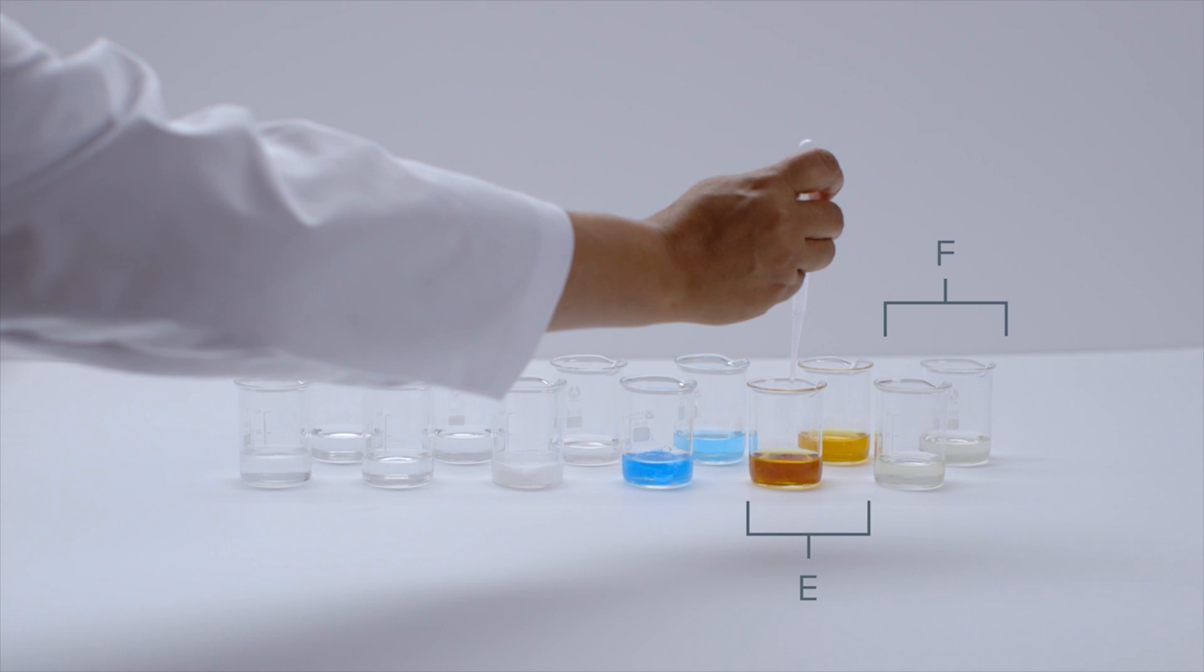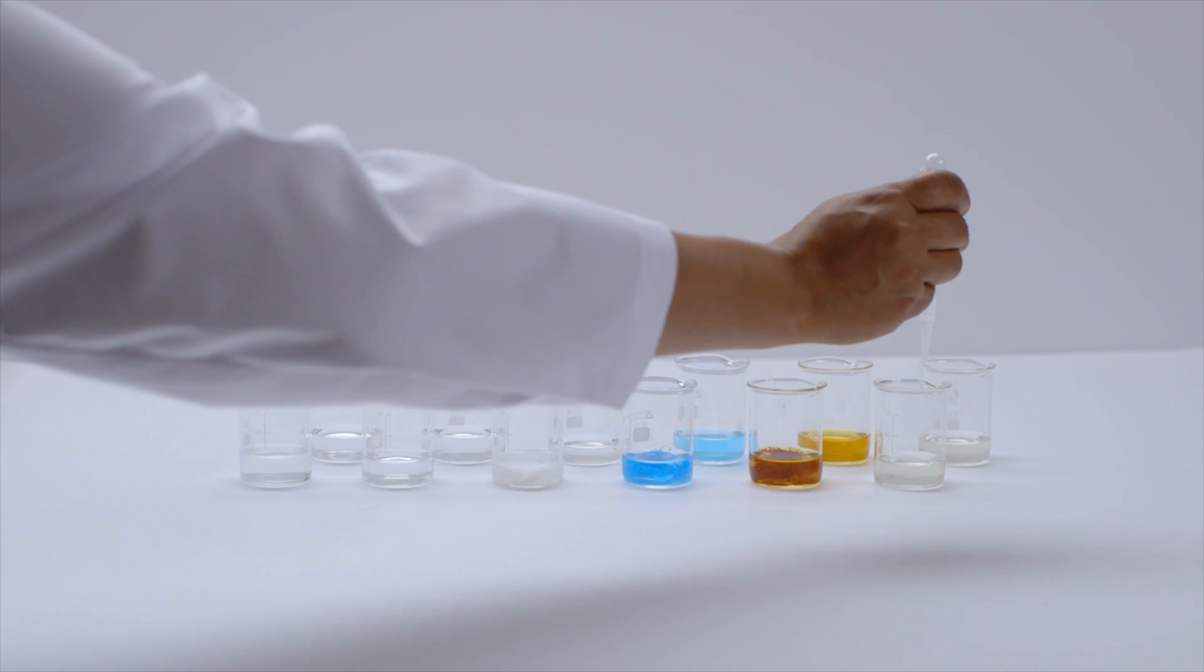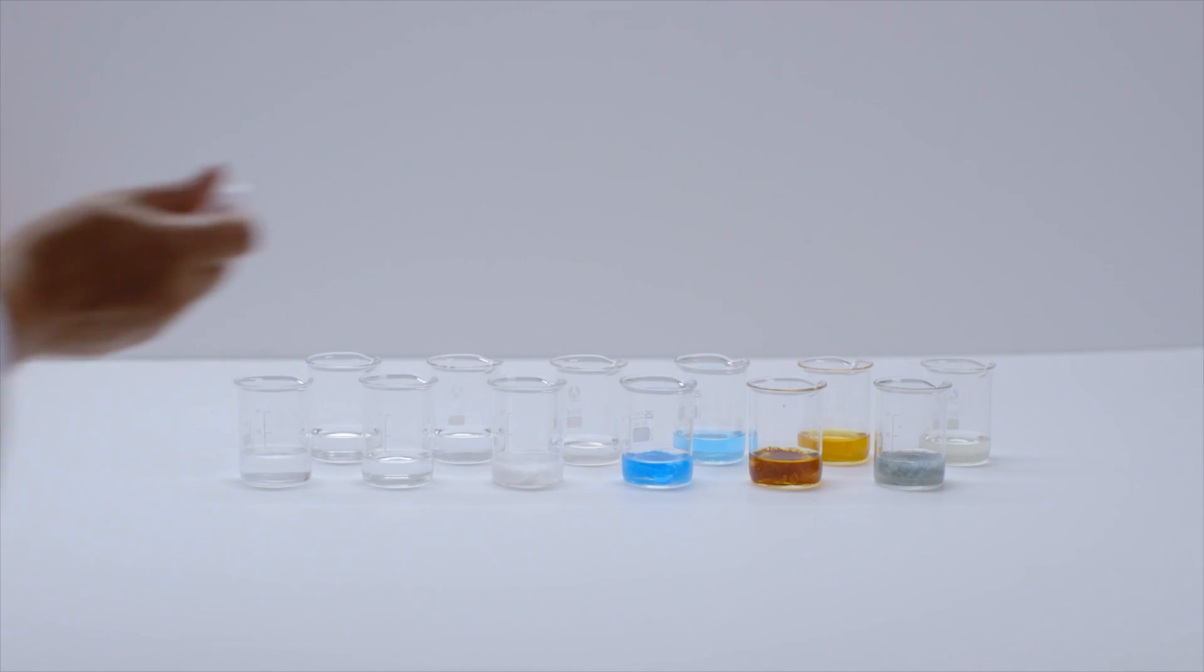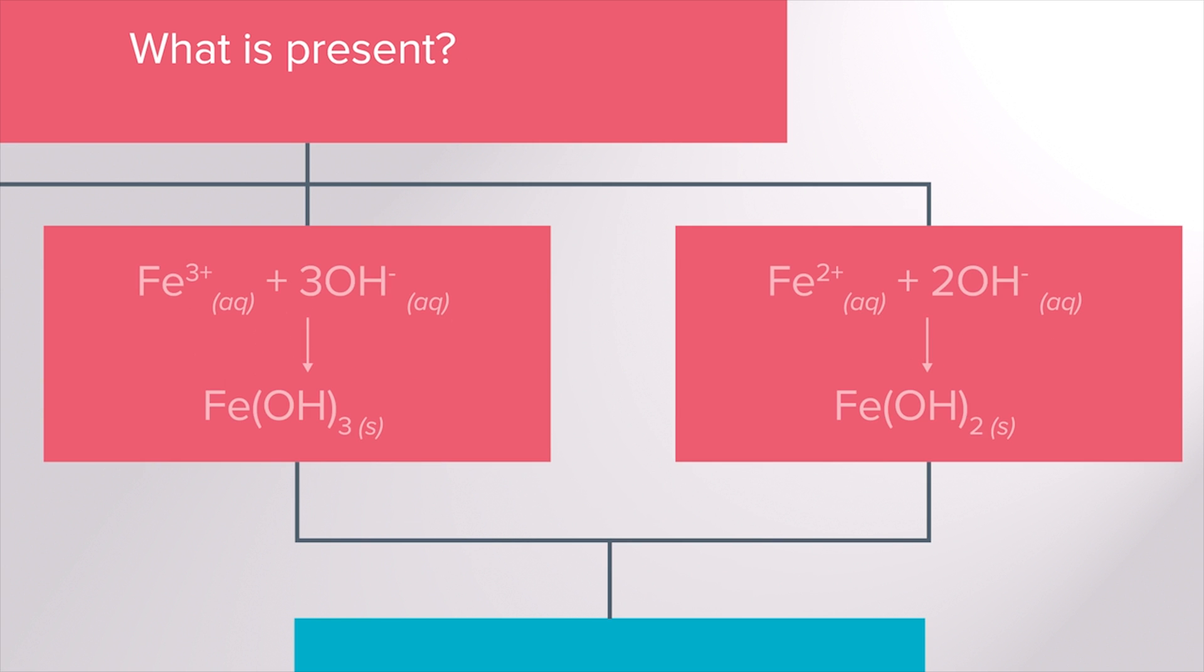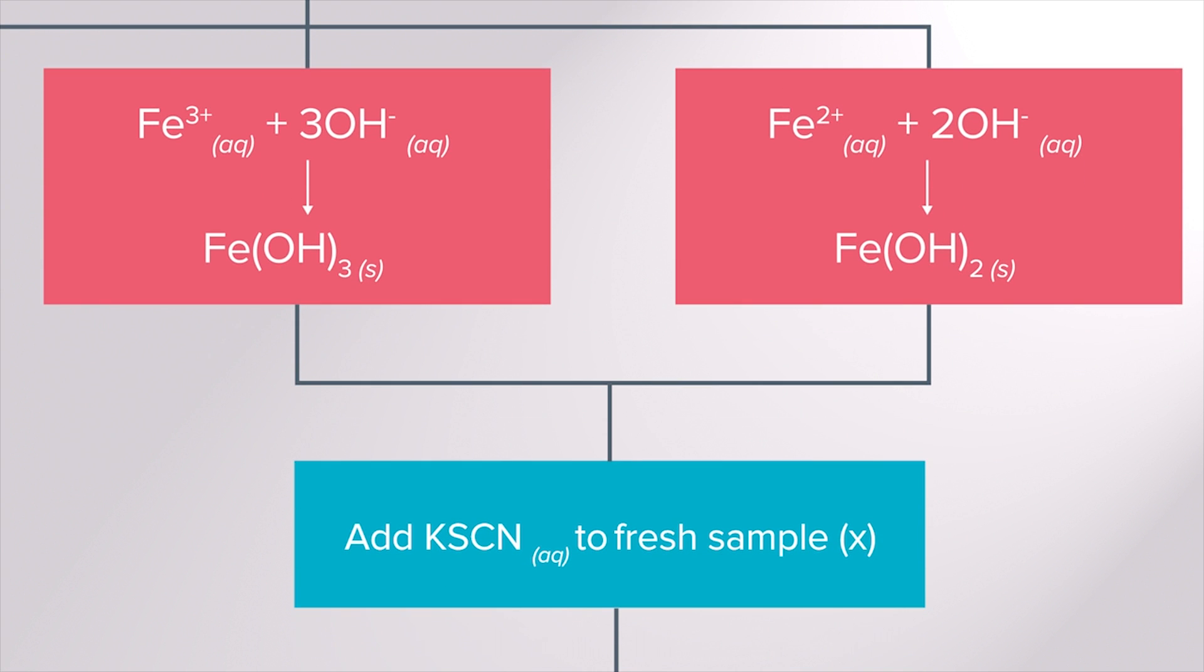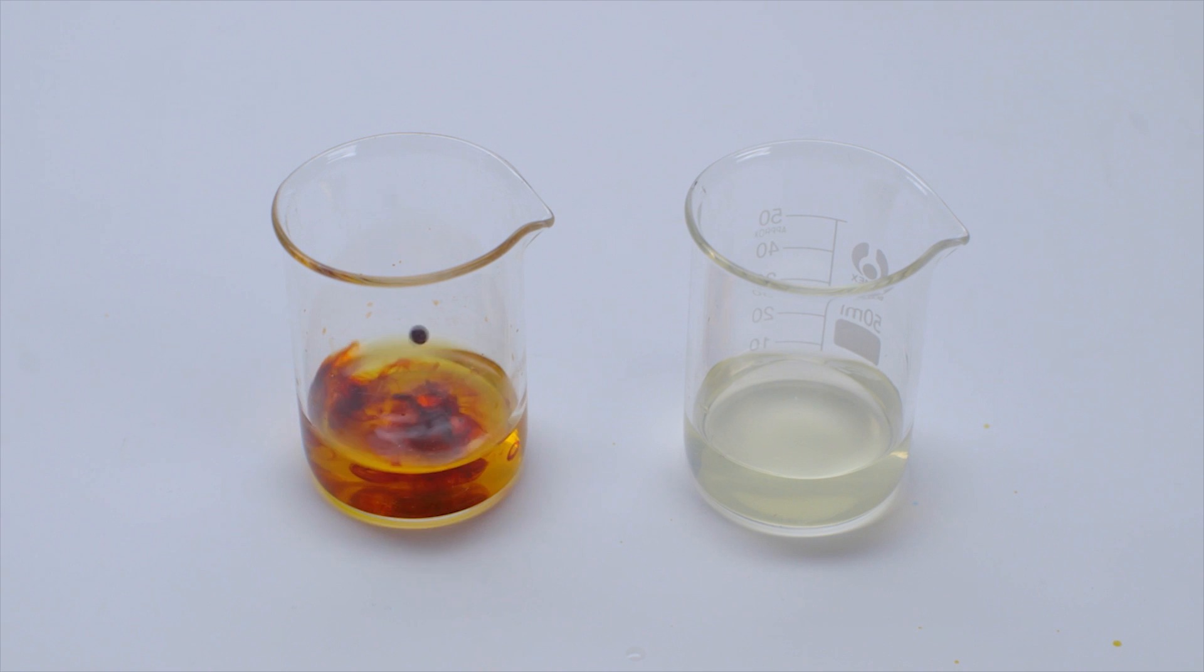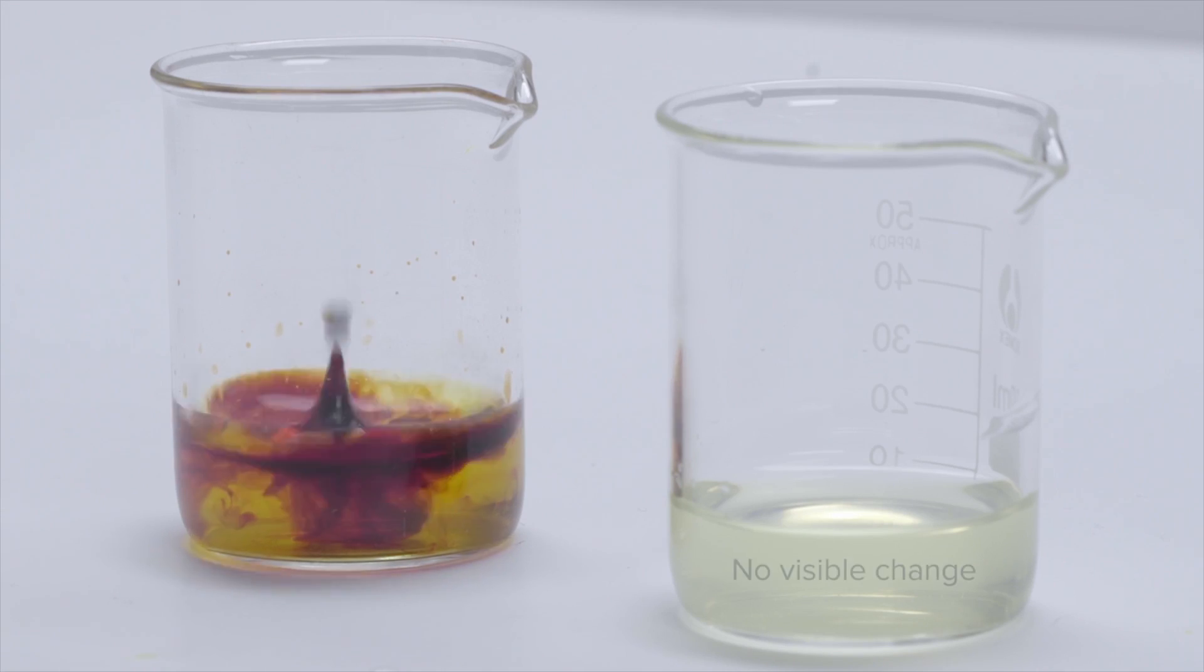If the colour of the hydroxide precipitate is orange brown or green it probably contains Fe³⁺ or Fe²⁺ respectively. We can confirm the ion by addition of potassium thiocyanate solution to a fresh sample of the cation. If the resulting solution is a blood red colour then the sample contains Fe³⁺ ions but if there is no visible change it contains Fe²⁺ ions.